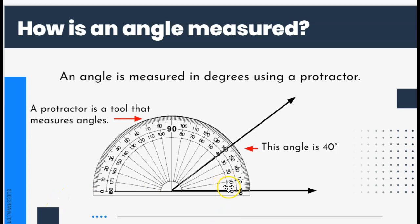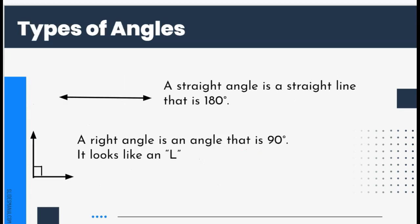Looking at the inside numbers on the protractor, it goes up to 40, so this angle is 40 degrees. There are a few types of angles — you are going to be learning about four of them this year.